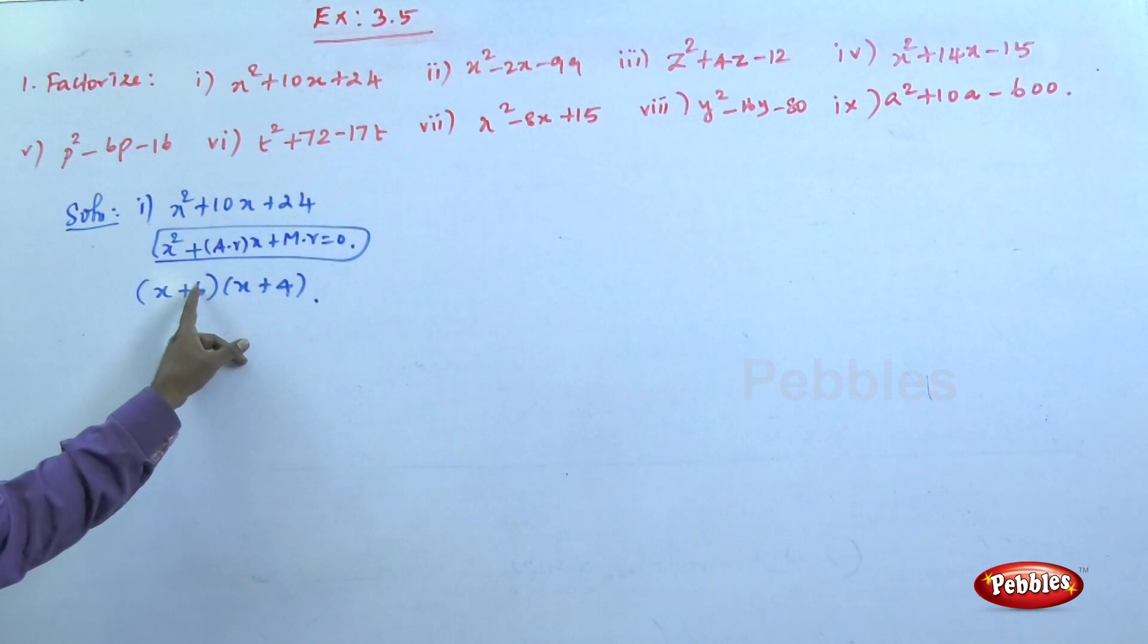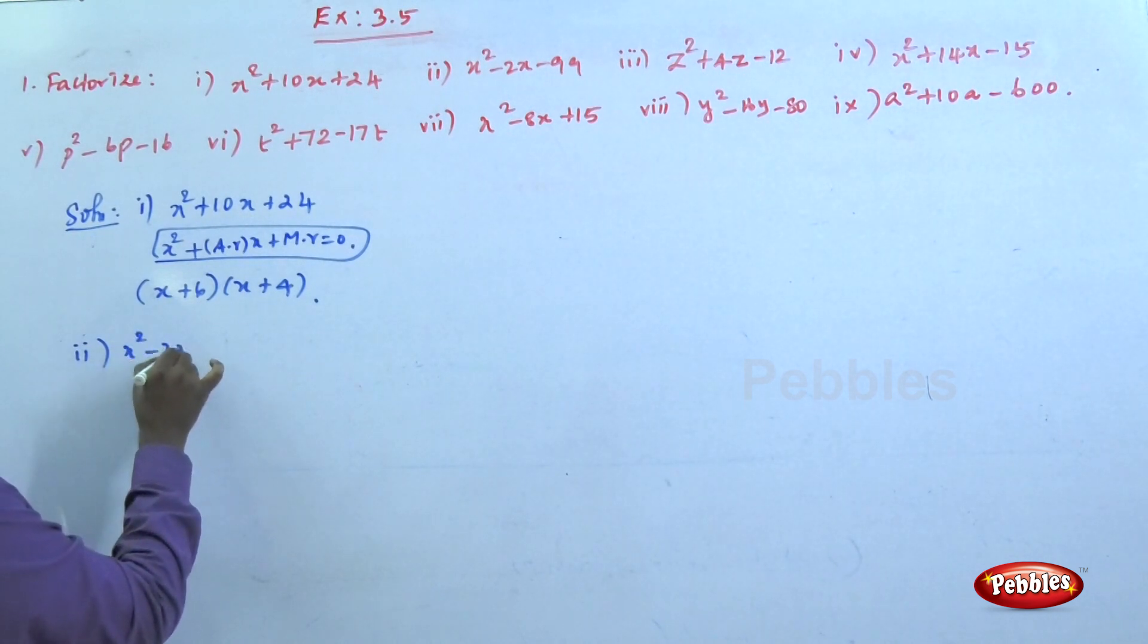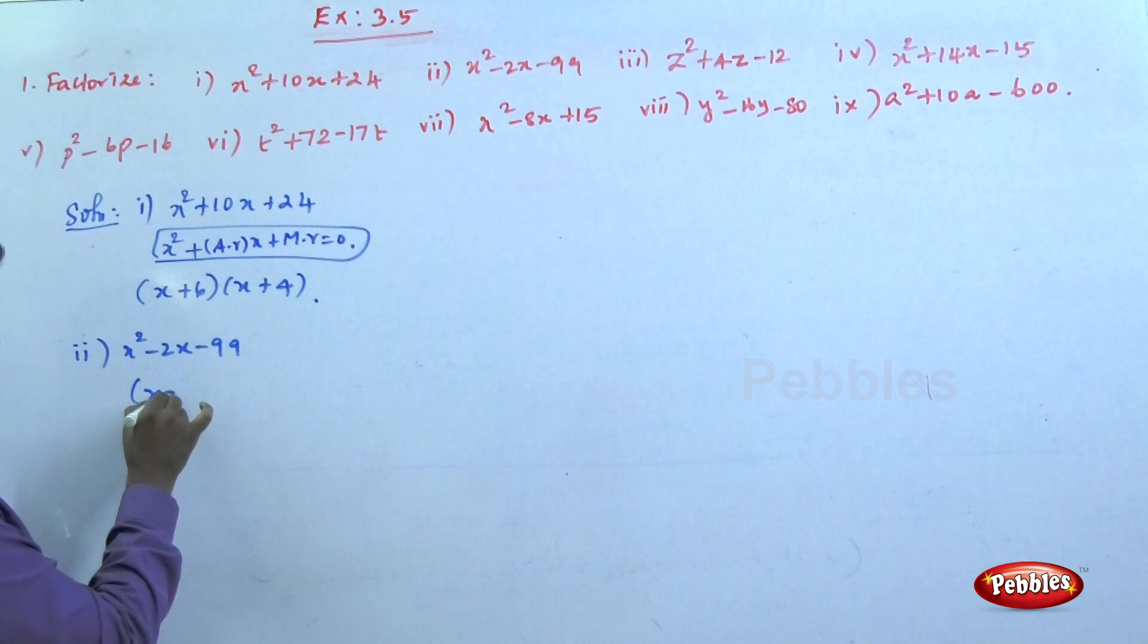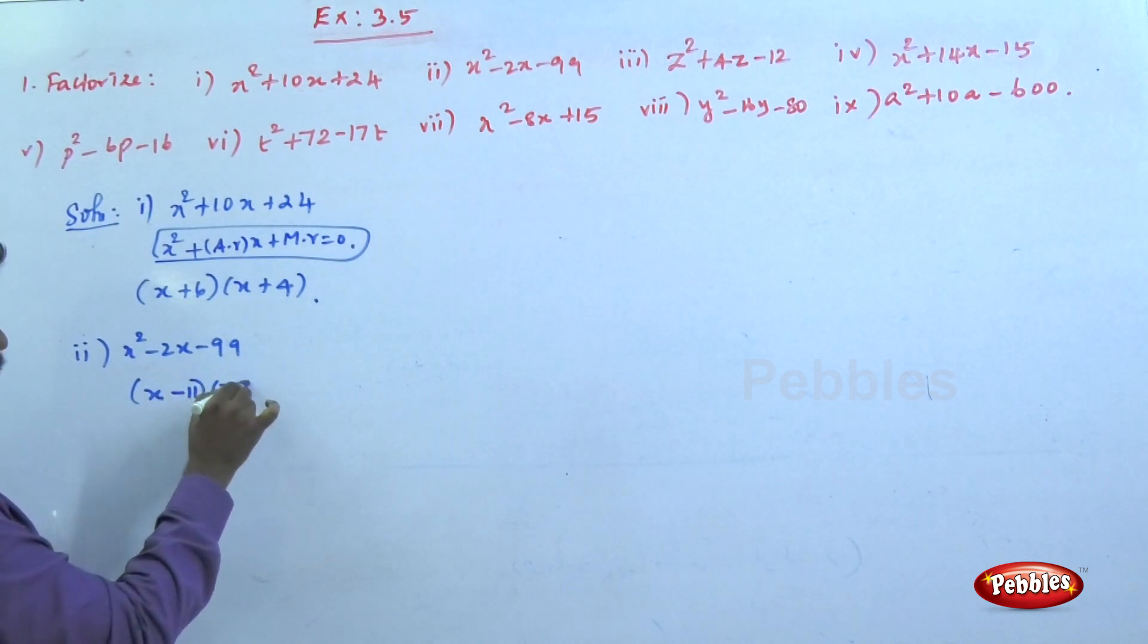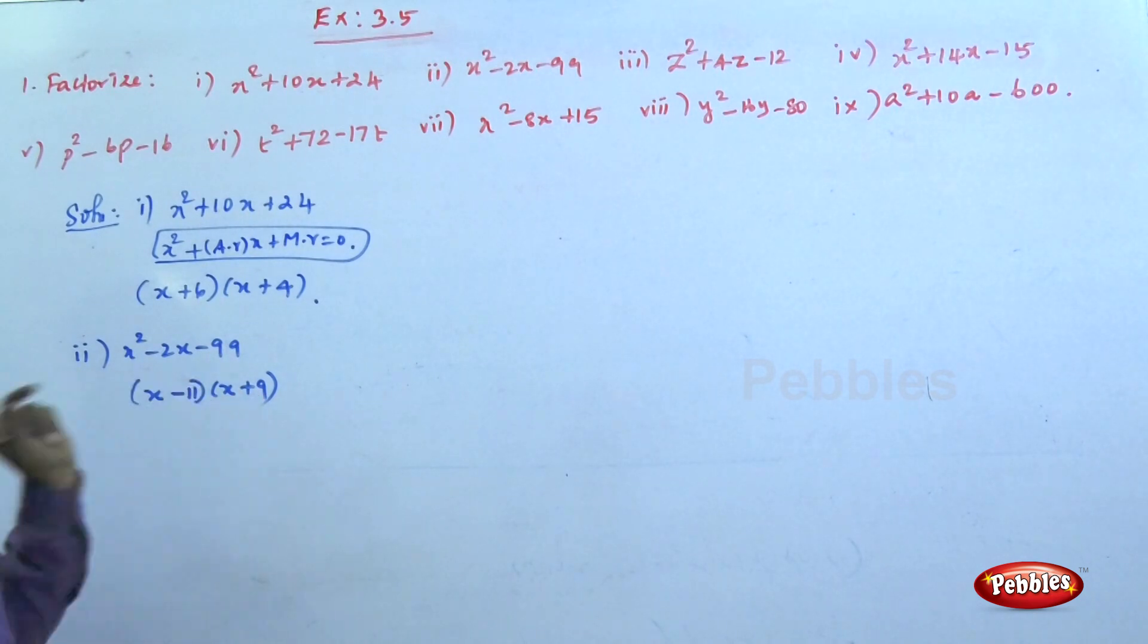The second problem: x² - 2x - 99. The factors are (x - 11)(x + 9). -11 + 9 = -2, -11 × 9 = -99. These are the factors.